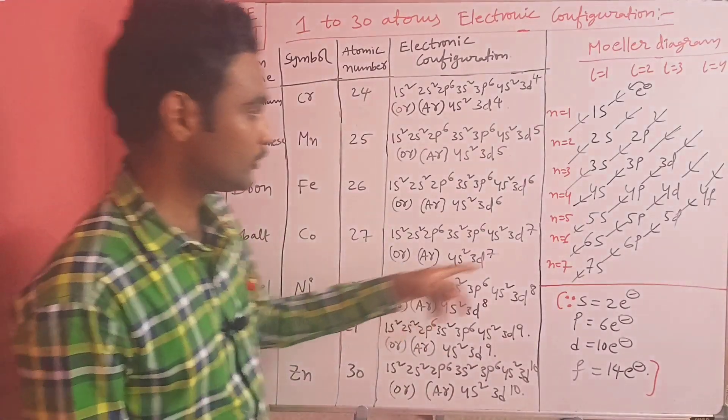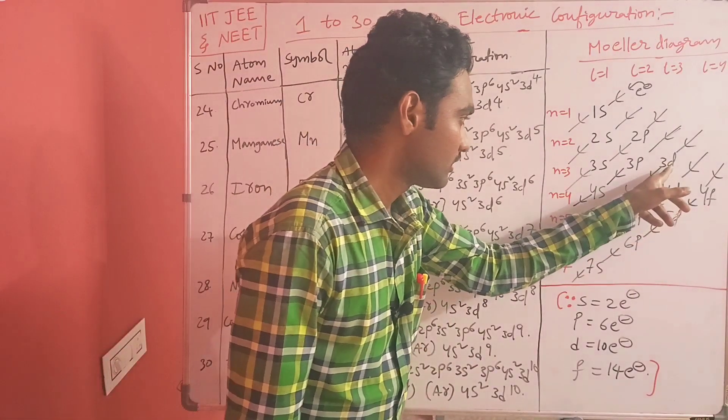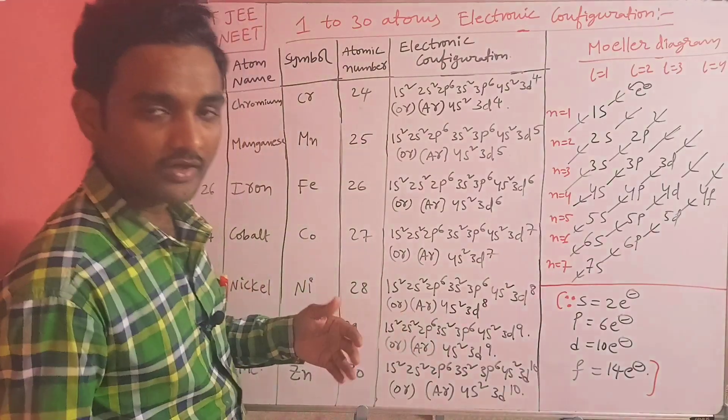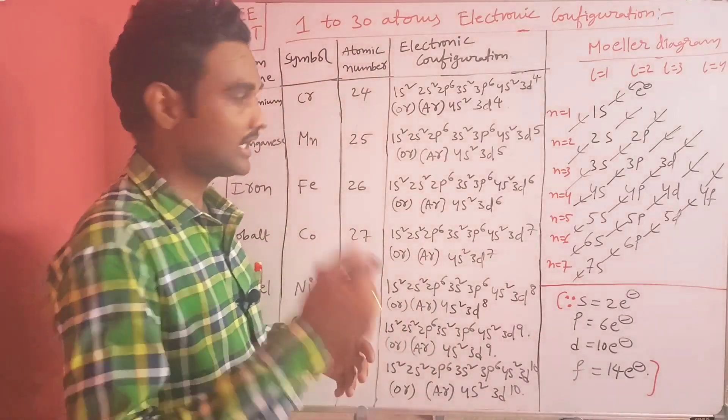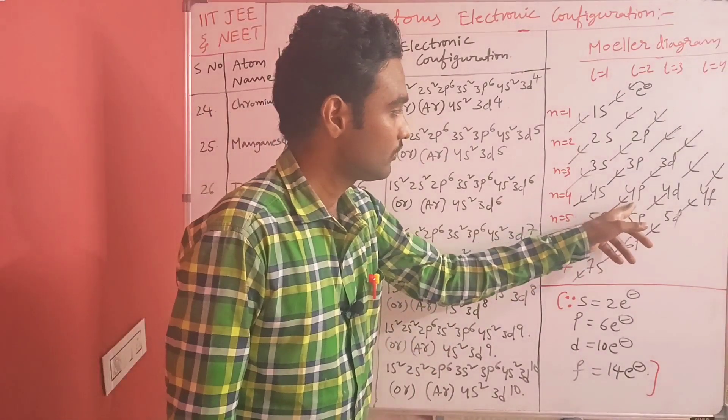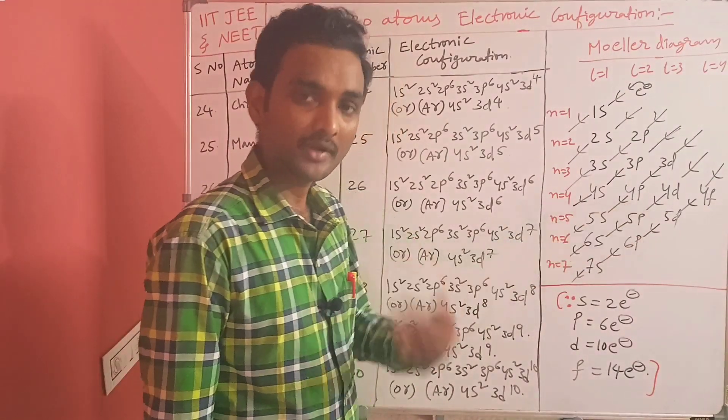Up to zinc (atomic number 30), the 3d orbital is completely filled. If the next electron is present, it will go to the 4p orbital.